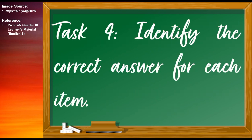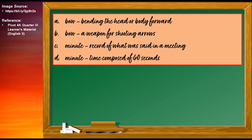For our fourth task, I want you to identify the correct answer for each item. The choices are: Letter A — BOW, meaning bending the head or body forward; Letter B — BOW, meaning a weapon for shooting arrows; Letter C — MINUTE, meaning record of what was said in a meeting; Letter D — MINUTE, meaning time composed of 60 seconds.